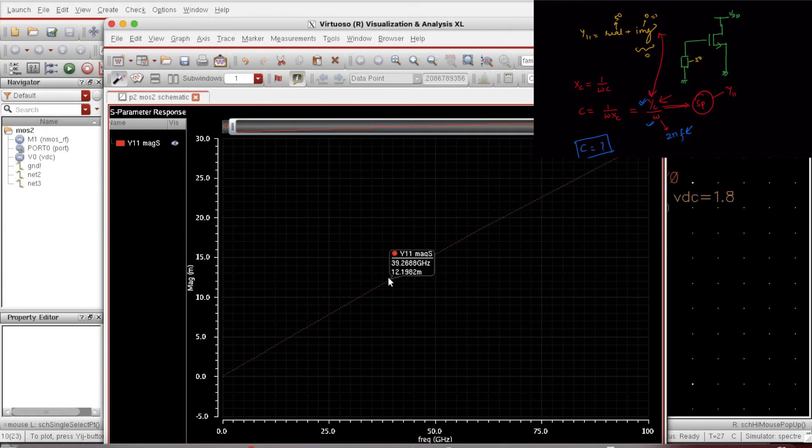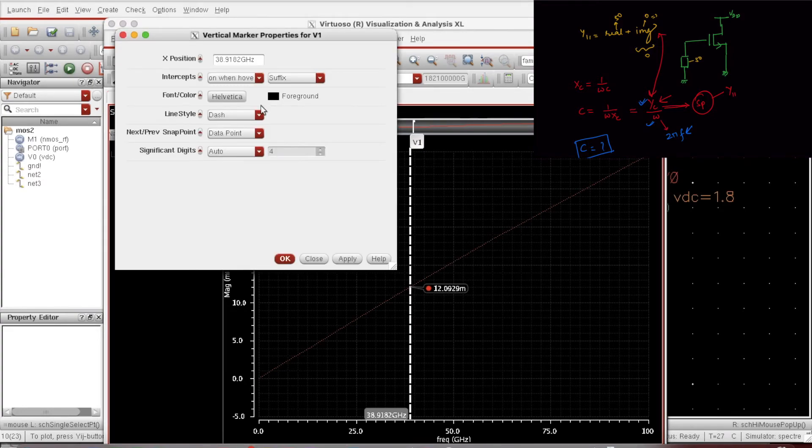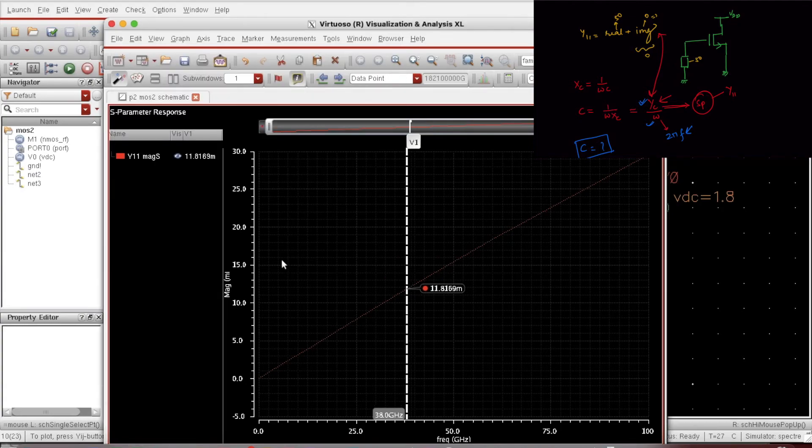To see this I can press V, the marker will come. I double click this marker and I can insert the 39 gigs here. It will give me the exact value: 11.81. Let's consider it 12.